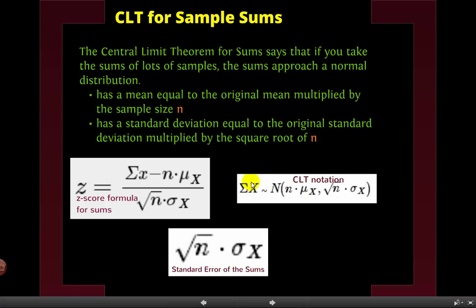And here is our notation for it. So we have our sum of x follows the n, the normal curve, parentheses, and then we have how many things there were times our mean, comma, the square root of n times the standard deviation. So you put those values in. And again we have our standard error. This is again just our standard error of sums. Just like we have the standard error of the means, where we had the standard deviation divided by the square root of n, this is the standard error of the sums, the formula that you're going to use. And that's all that's called.